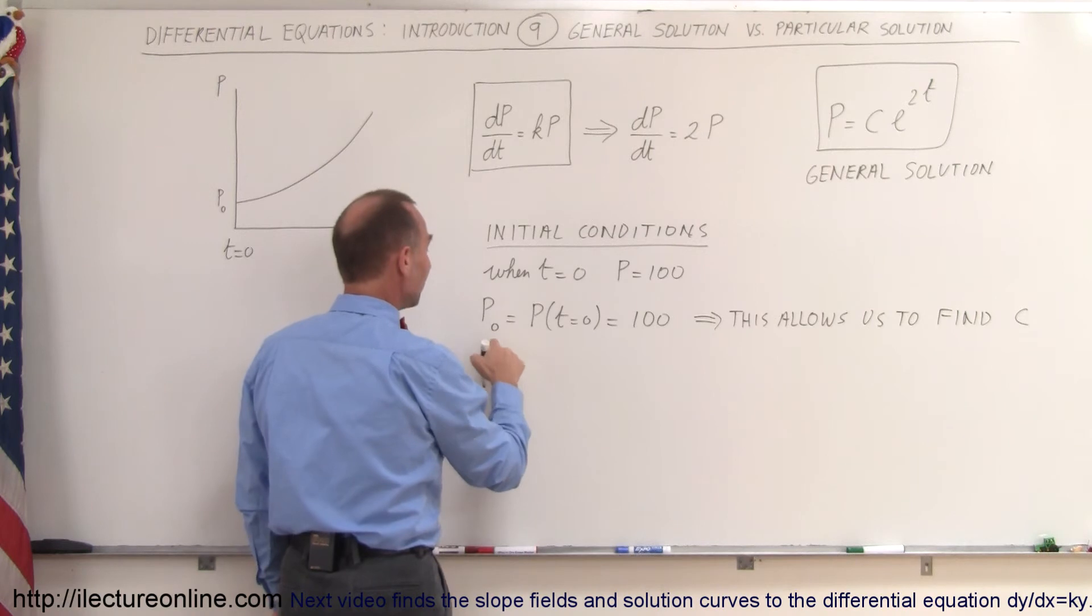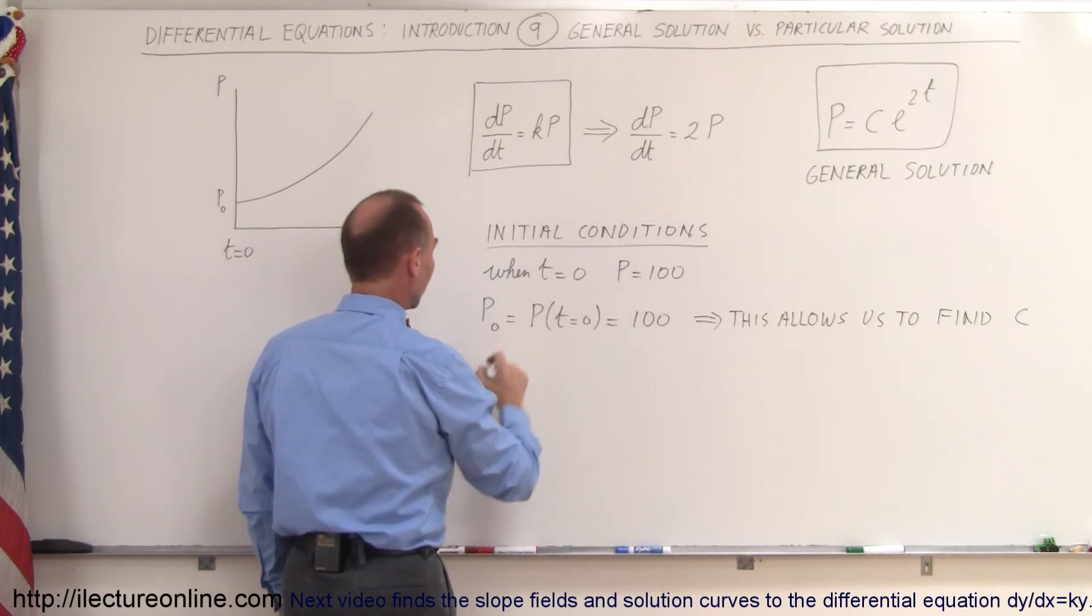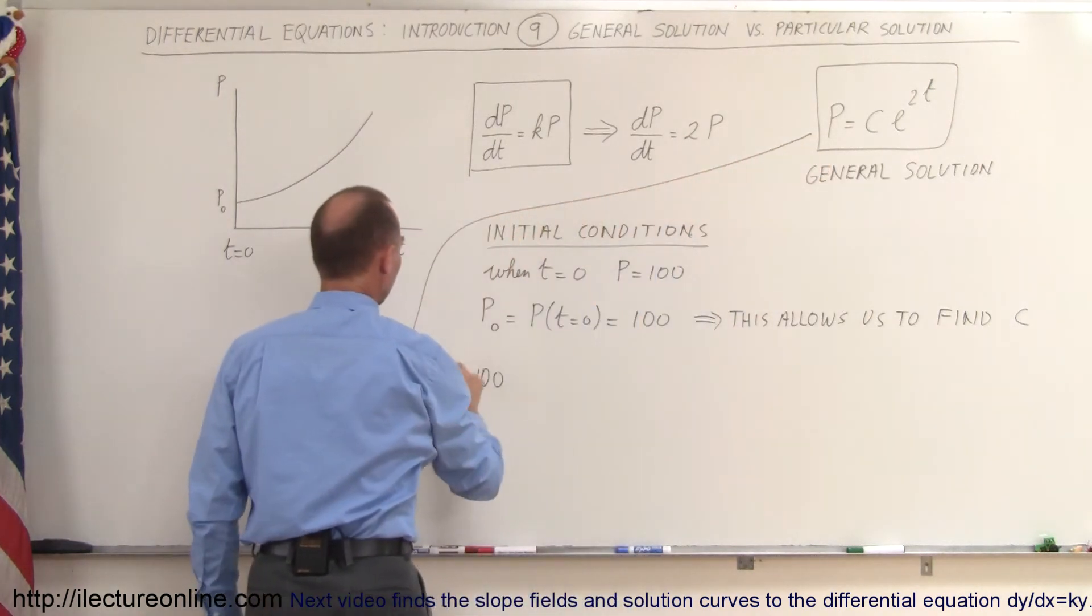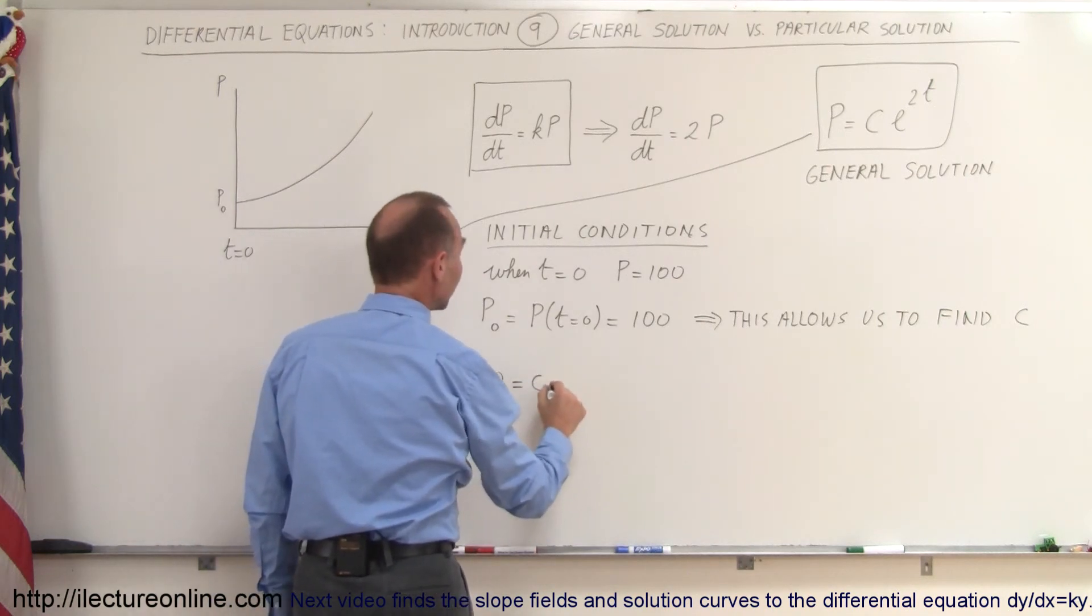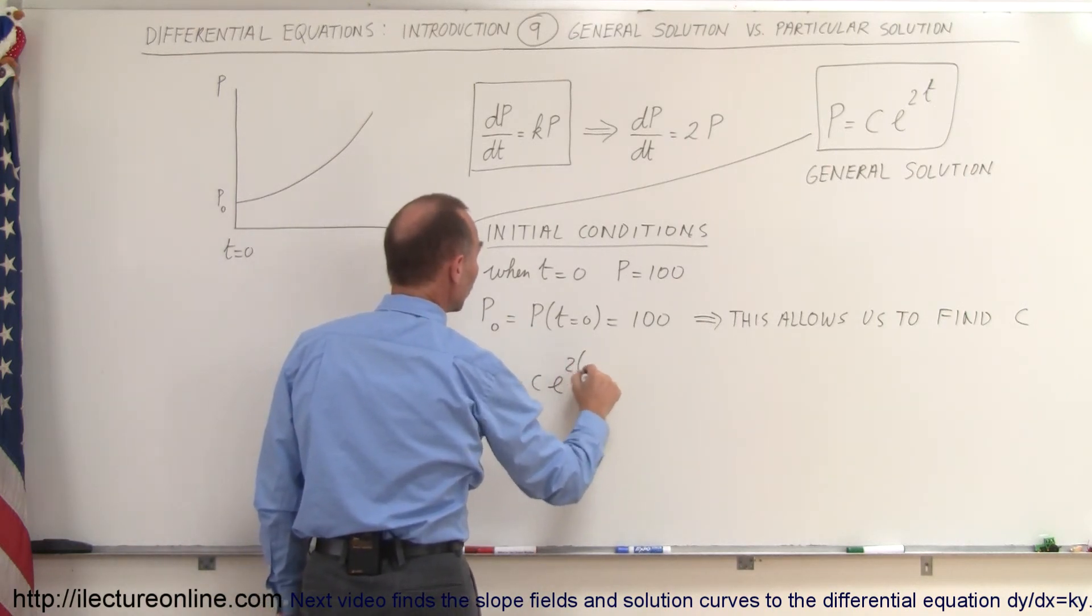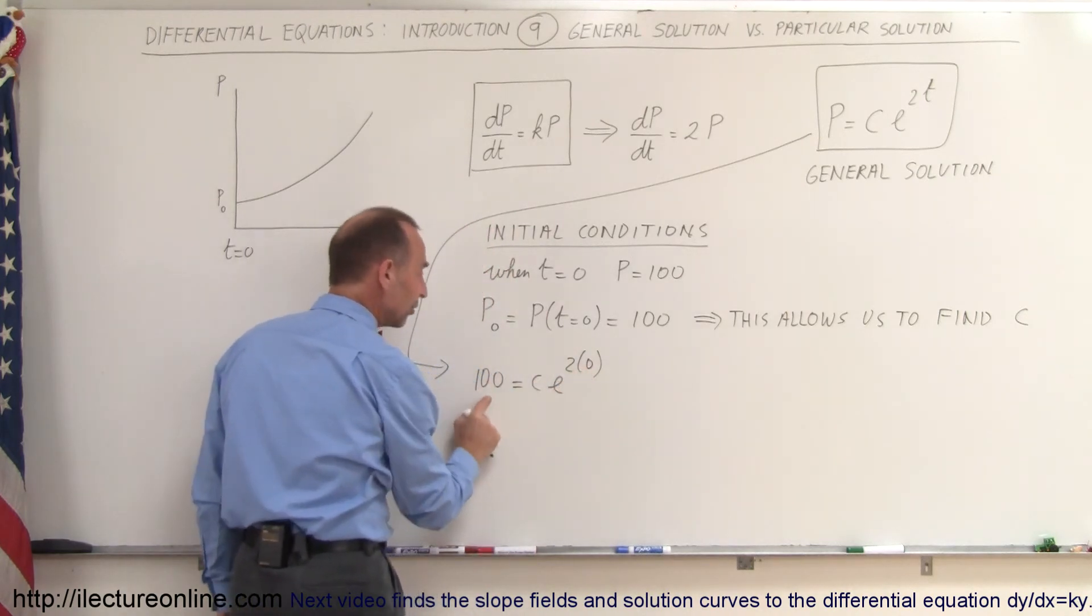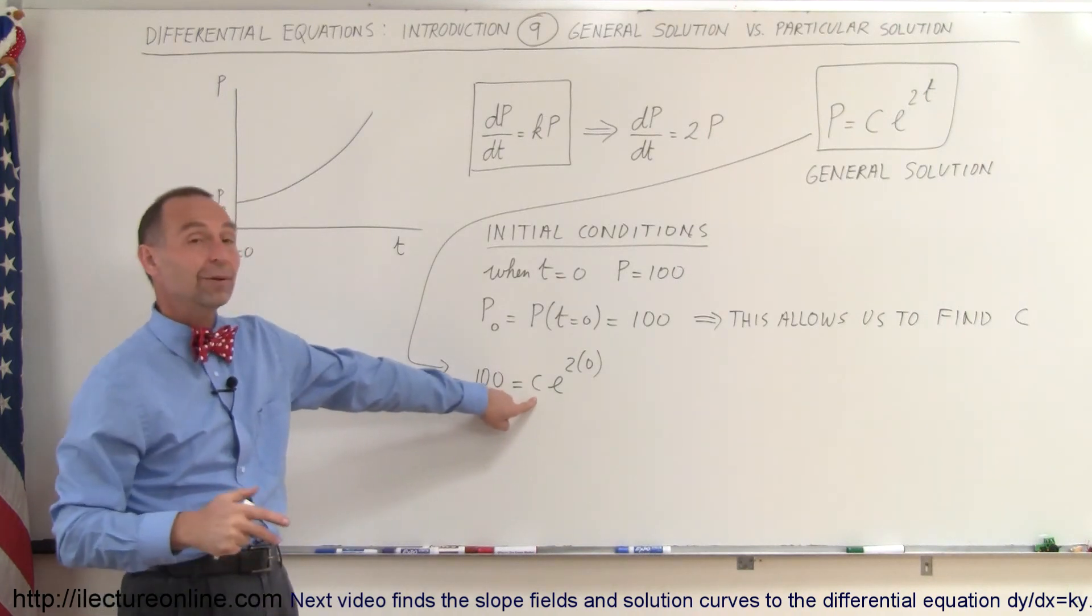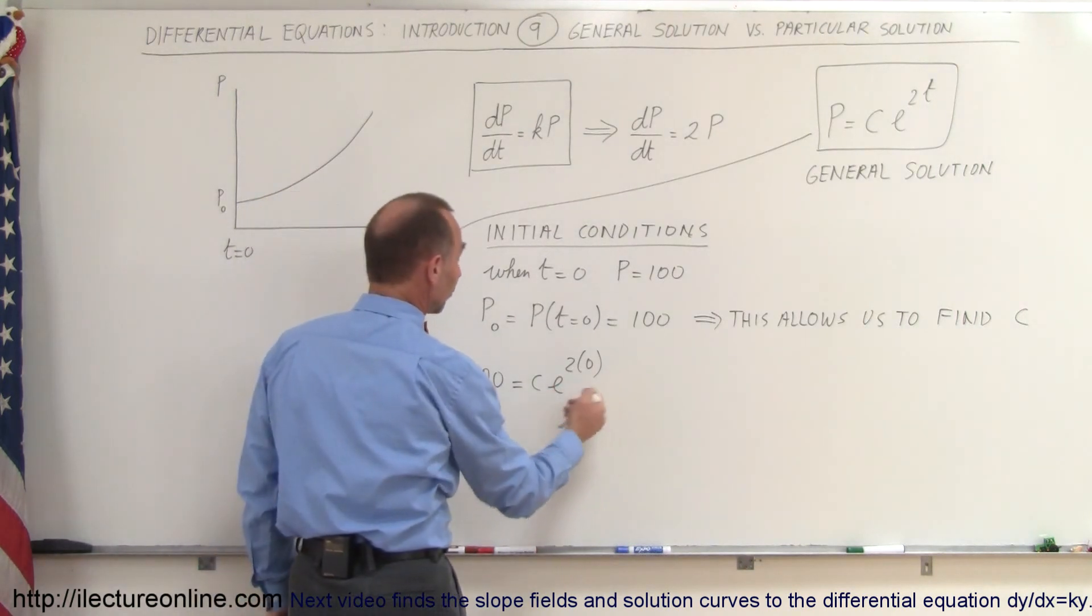When p is equal to 100, when t is equal to 0, so we can say that 100, because now we take this equation right here, and instead of writing p, we'll write 100, is equal to c times e to the 2 times 0. When t is equal to 0, p is 100. So that's what we call the initial condition. Now this allows us to solve for c, because that's the only unknown left in the equation. Well, e to the 0 power is equal to 1...